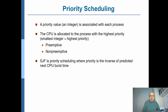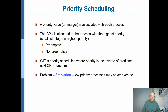If you look at Shortest Job First scheduling, it is actually a kind of priority scheduling algorithm where the priority is the inverse of the predicted next CPU burst time. If a process has a shorter next CPU burst time, it has higher priority. So SJF is actually a special case of priority scheduling.